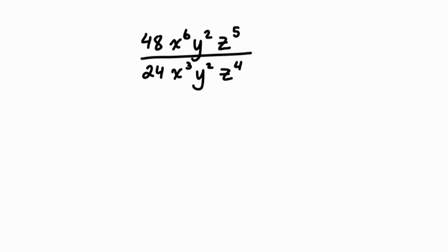Then divide the powers with corresponding bases. When we divide the powers with the same base, we subtract the exponents. So 48 divided by 24 is 2.